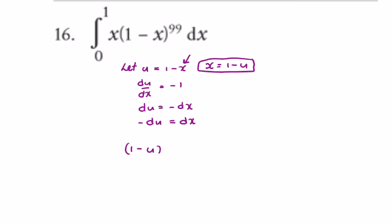So x is 1 minus u, and 1 minus x is u to the power of 99, and this equals minus du. With a minus 1 in front, the integral becomes the integral between 1 and 0 of 1 minus u times u to the power of 99. Multiplying out the bracket gives u to the power of 99 minus u to the power of 100.